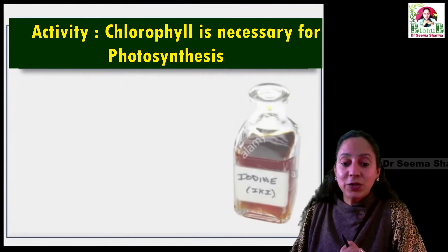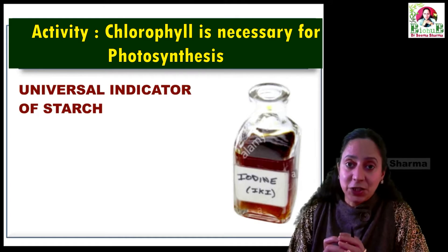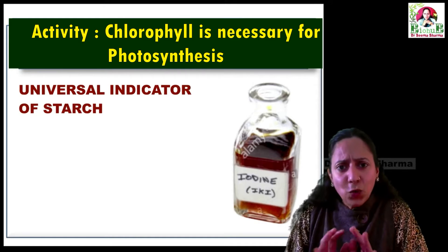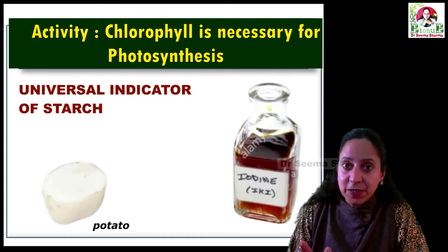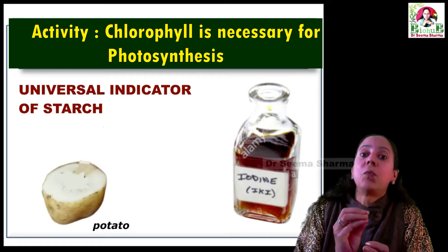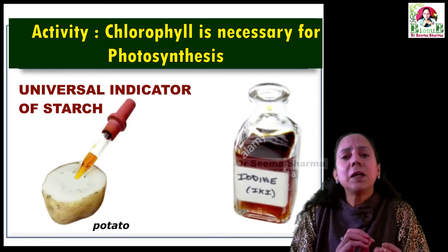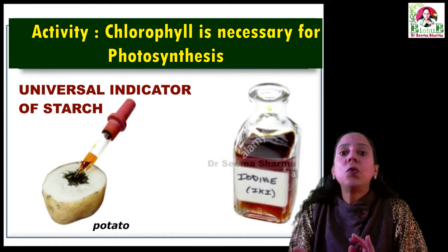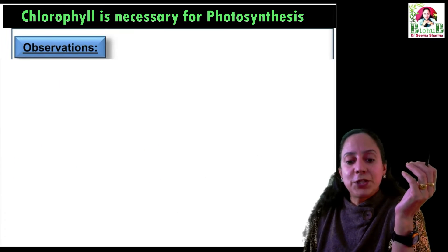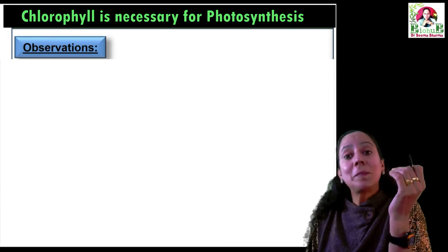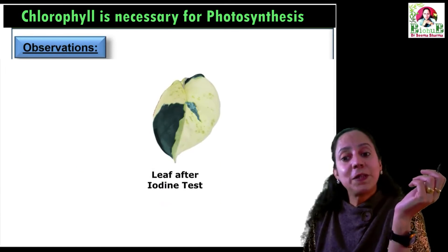Lastly, pour iodine over the leaf and note the color change. Iodine is a universal indicator of starch — in whatever material starch is present, pouring iodine on it will immediately turn it blue-black.